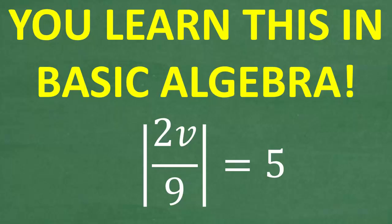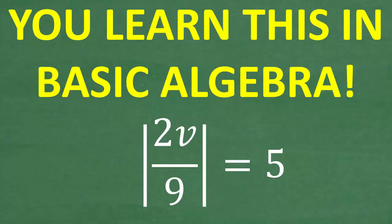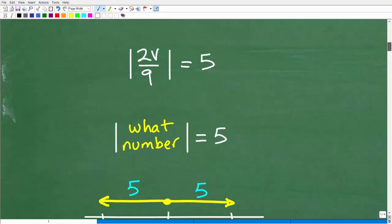Okay, so what are we talking about here? This is a typical type of problem you could see in a pre-algebra or algebra one course, and what we're dealing with here is absolute value. These little bars right here are indicating this is an absolute value function. This happens to be an absolute value equation.